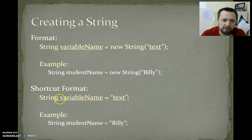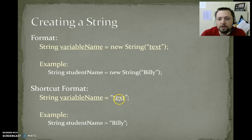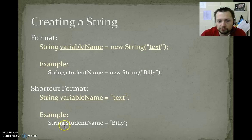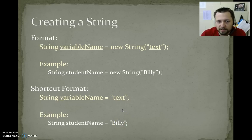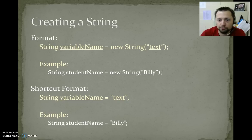The shortcut format is: String variable name equals quote text. For example, String studentName equals Billy. That's the way we do it. But what's really happening behind the scenes is it says String studentName equals, and then it puts in new string Billy for you.